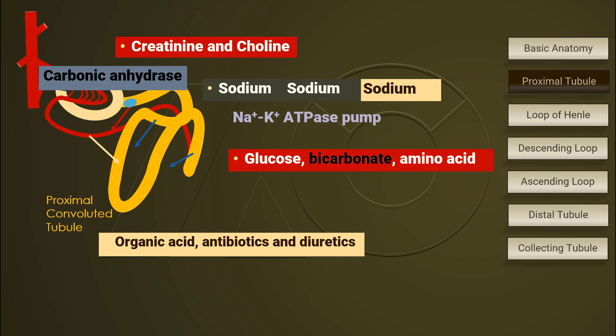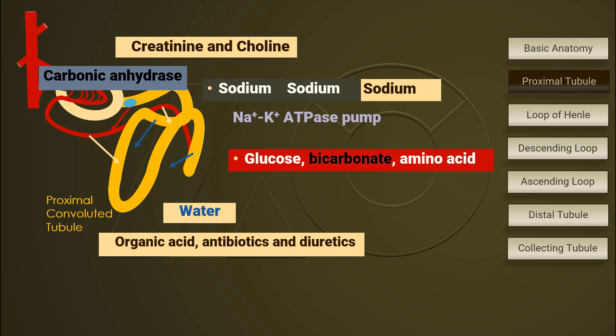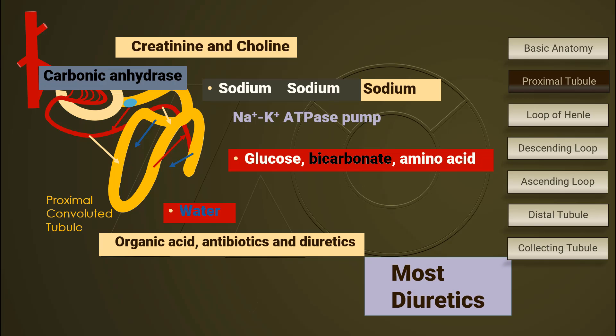Organic bases, such as creatinine and choline, are excreted at the upper and middle proximal tubule. Water passes through back into the blood passively from the nephron lumen.